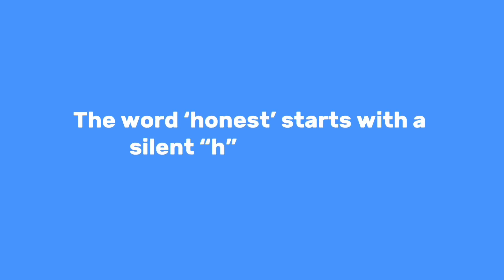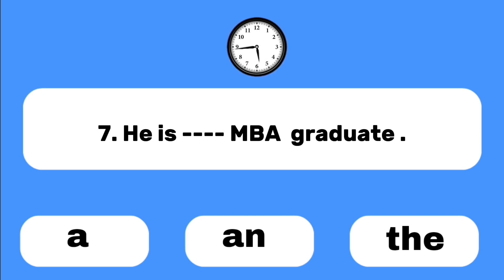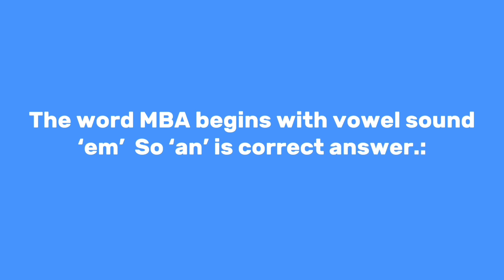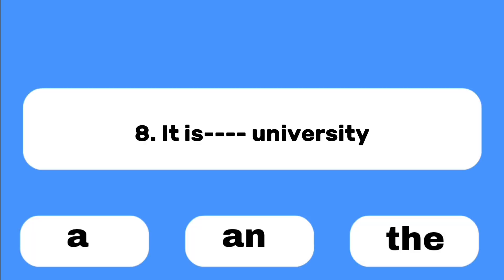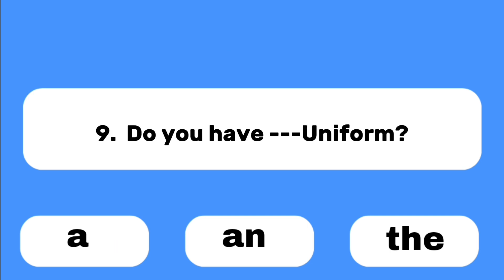Number six: He is ___ honest person. The word 'honest' starts with a silent H, so use 'an.' Number seven: He is ___ MBA graduate. The word MBA begins with vowel sound 'em,' so 'an' is the correct answer. Number eight: It is ___ university.